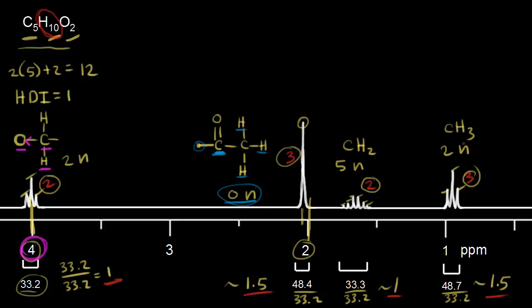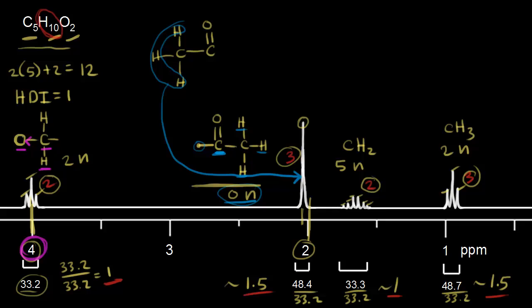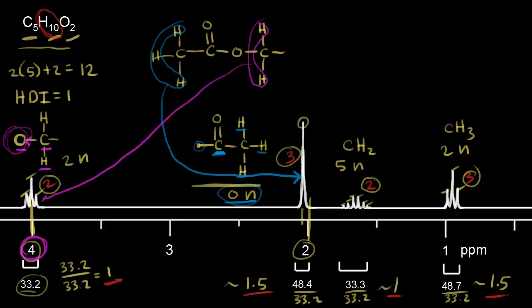Let's put all the pieces together and draw the final dot structure. Starting with the carbonyl and the methyl group bonded to it — the signal for these blue methyl protons appears just past two parts per million. Next, putting the oxygen next to the carbonyl gives us an ester. Bonded to that oxygen, we draw in our CH2 group. The protons in magenta give us the signal around four parts per million.